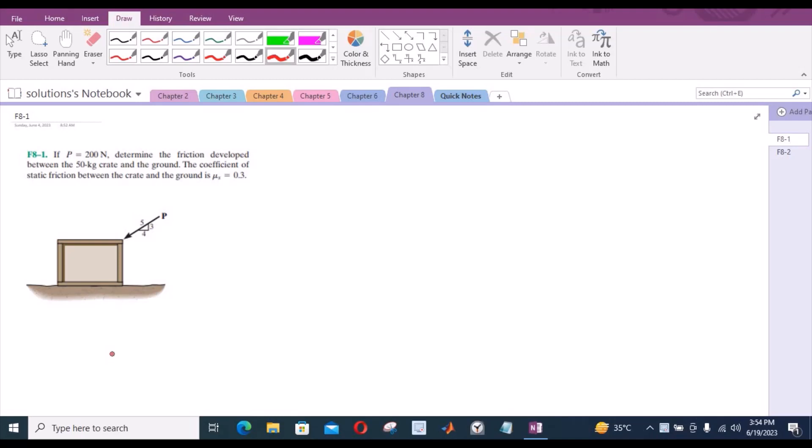Welcome back to the Solutions Manual. In this video, we will solve problem F8-1 from R.C. Hibbeler Engineering Statics 12th edition. Part A of this problem: if P equals 200 Newtons, determine the friction developed between the 50 kg crate and the ground. The coefficient of static friction between the crate and the ground is 0.3.